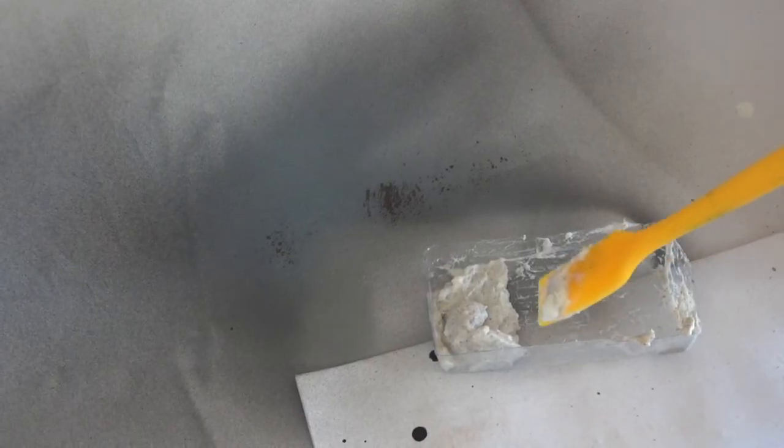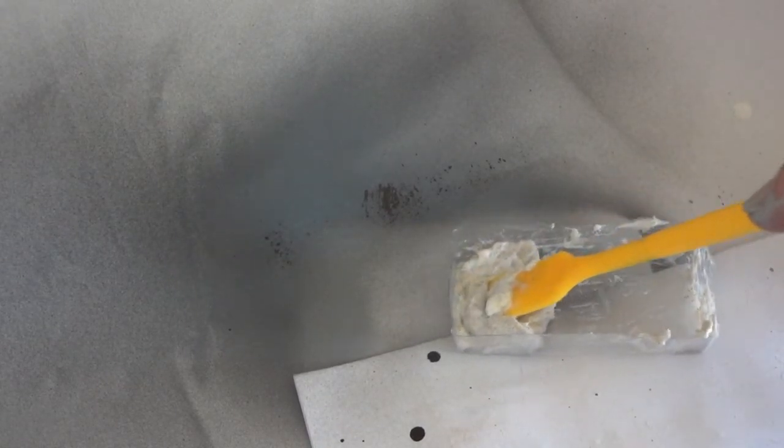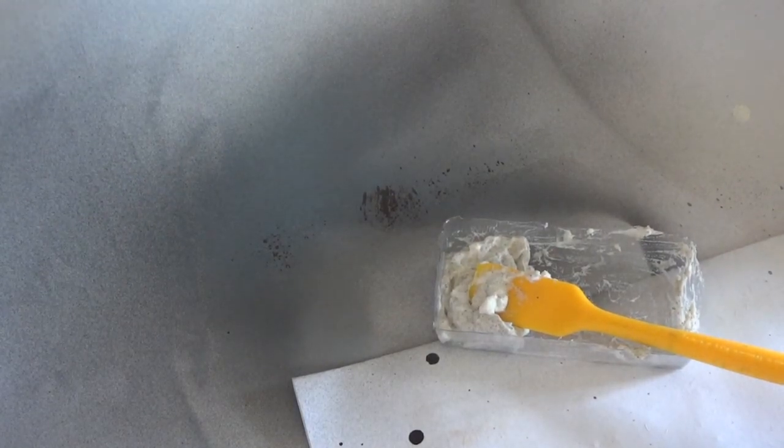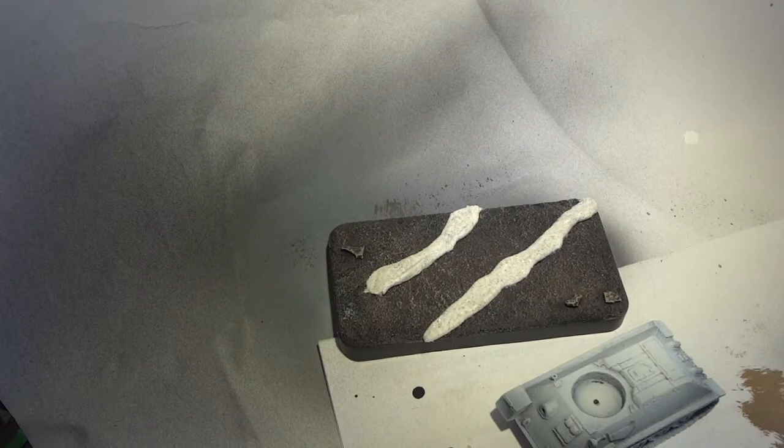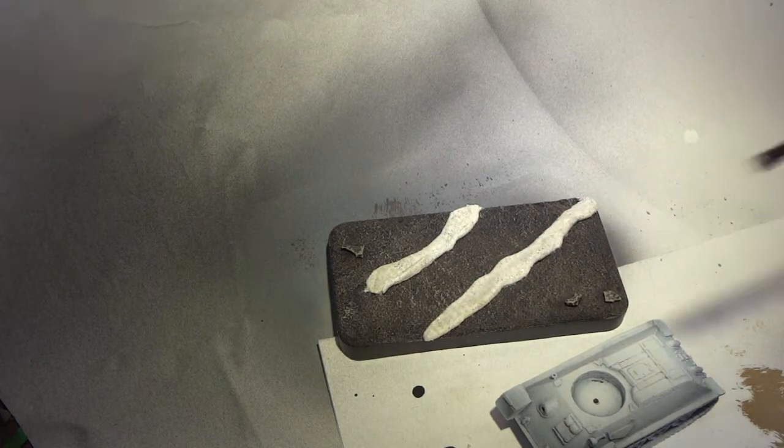I then make up a mixture of Ready Mixed Filler, PVA Glue, Static Grass, and Sand. This is then applied in two long, sausage-like shapes on the model's base. This is going to be used to create a textured mud, which is where the tank will have driven through.